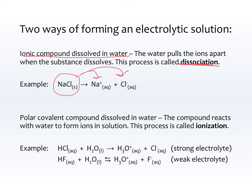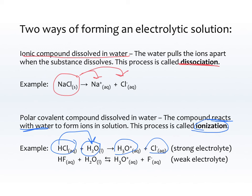We also have polar covalent compounds dissolving in water — this is called ionization. The compound reacts with water to form ions in solution. For example, HCl reacts with water, giving a hydrogen, so we get H3O+ and Cl-. Similarly, HF gives a hydrogen to form H3O+ and F-.